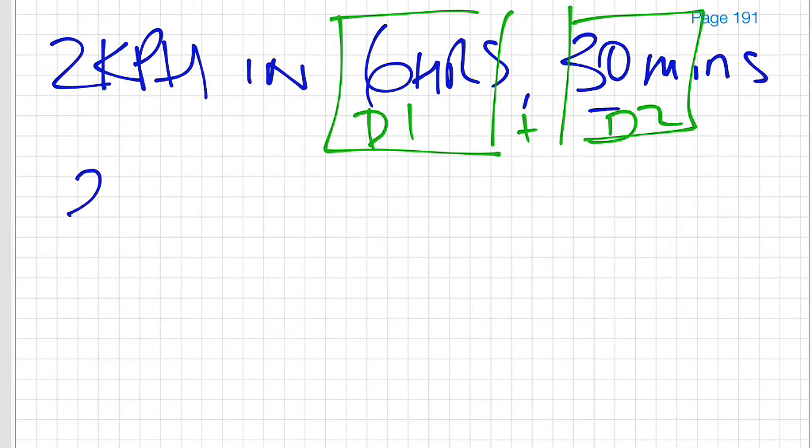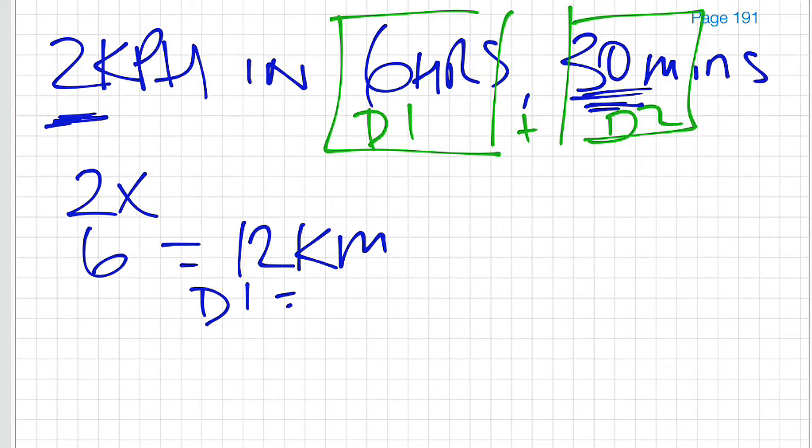2 kilometres per hour multiplied by 6 hours gives us 12 kilometres, and that's my D1 already sorted. Now D2, 30 minutes - I don't even need to calculate. 30 minutes is half of one hour and we're travelling 2 kilometres every hour. I've only travelled for half that time so I'm only going to cover half the distance. So half of 2 km is 1 kilometre.